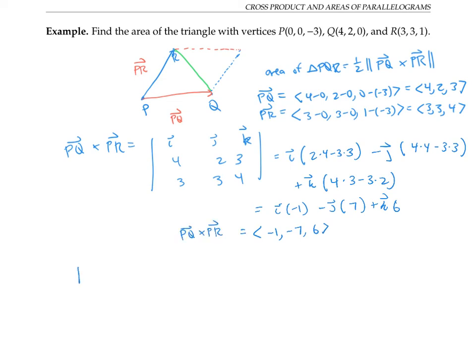Now I'll take the magnitude of this vector. That's going to be the square root of negative one squared plus negative seven squared plus six squared, or the square root of 86. And so the area of my triangle is going to be one half the square root of 86.